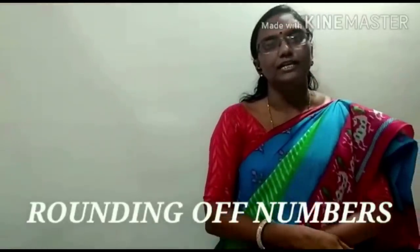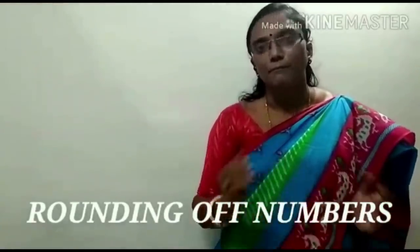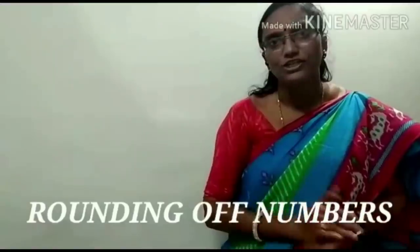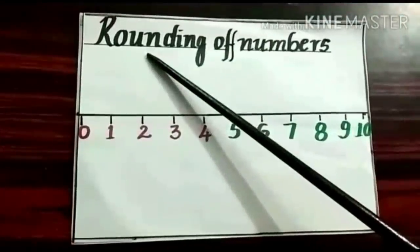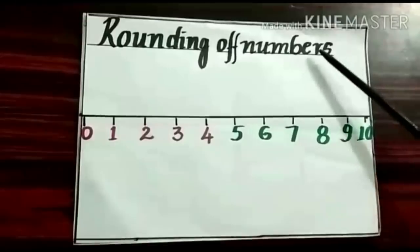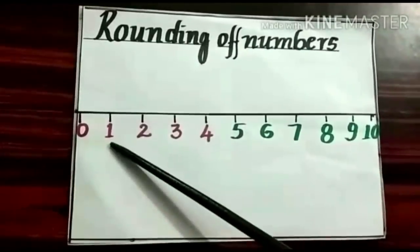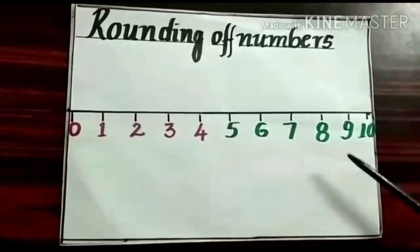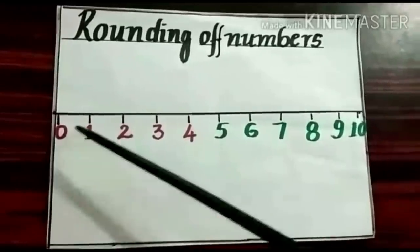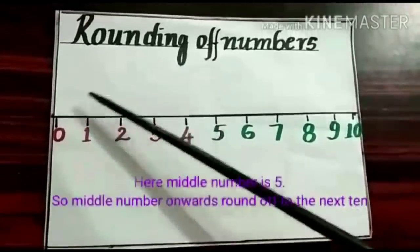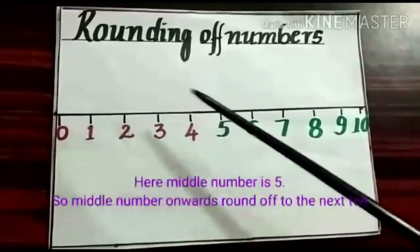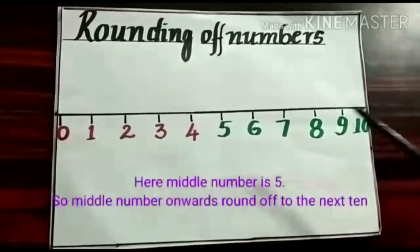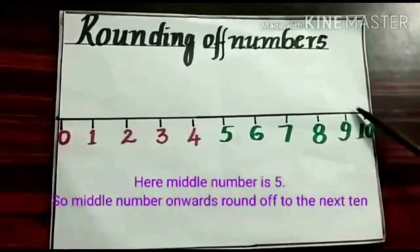Rounding of numbers is a way of estimation, and rounding of numbers makes calculation easier. Let us learn about rounding of numbers. See here — this number line has 0 to 10. Numbers 0 to 4, we round down to 0, and from 5 to 10, we round up to 10.